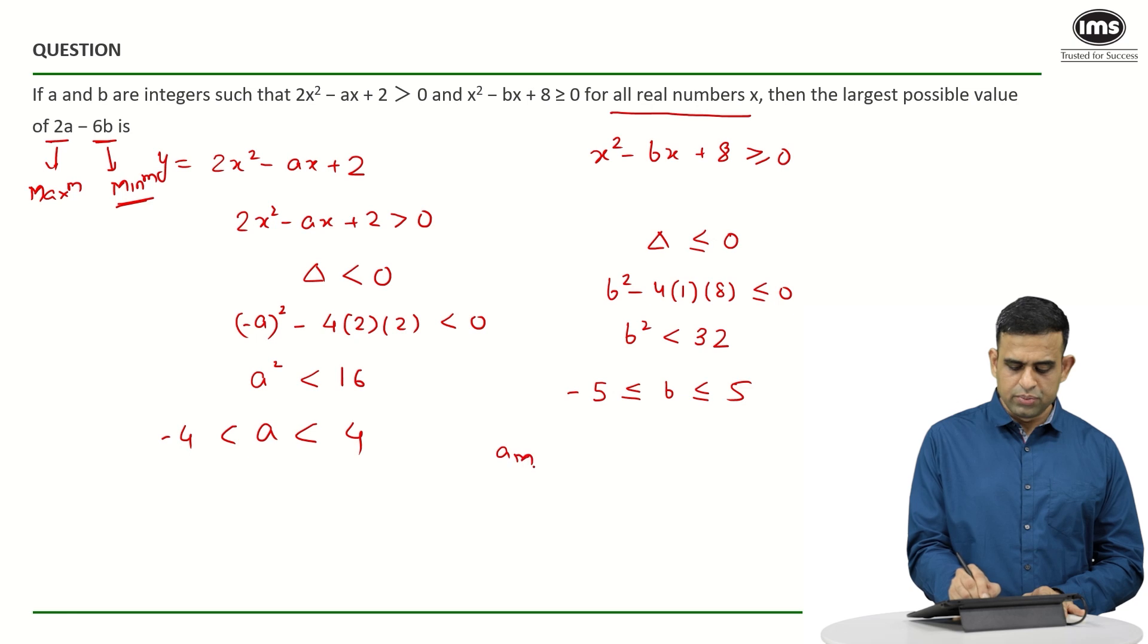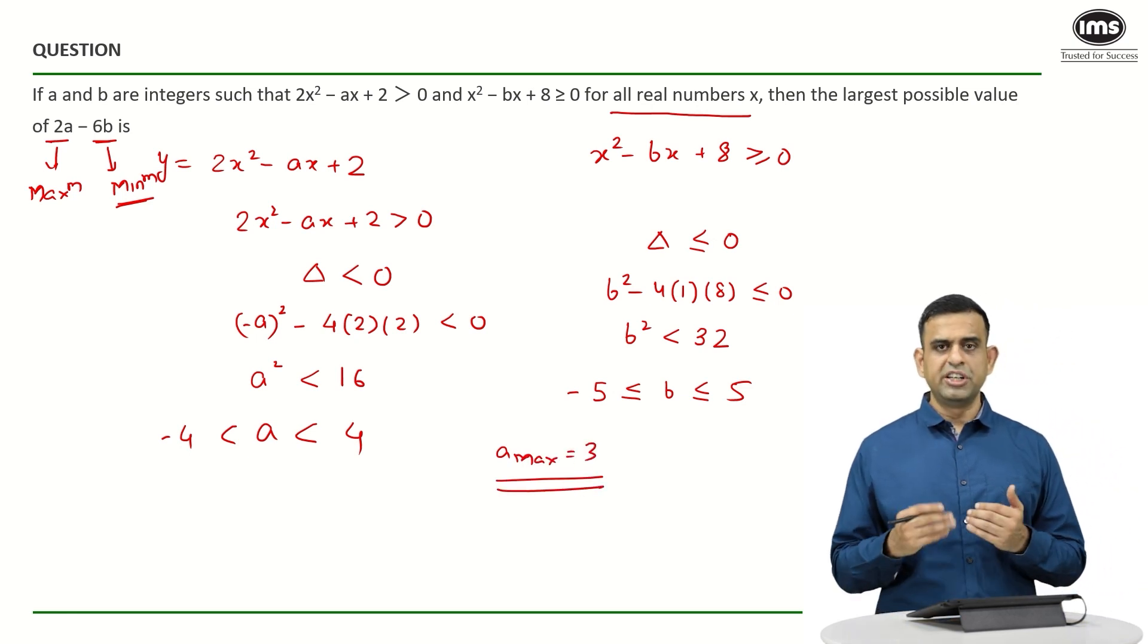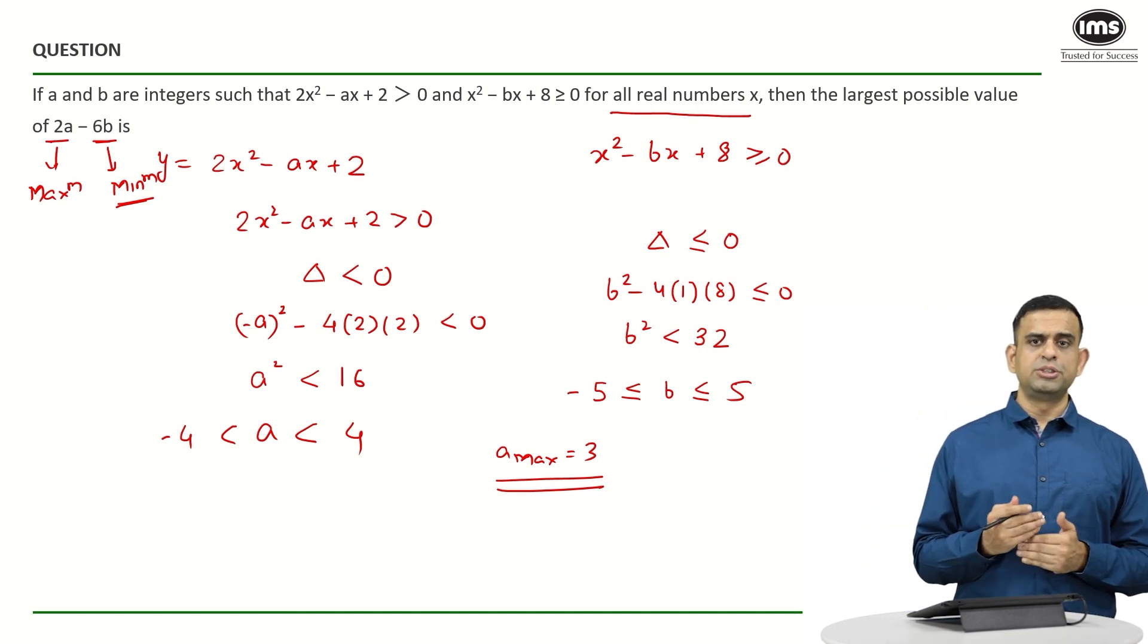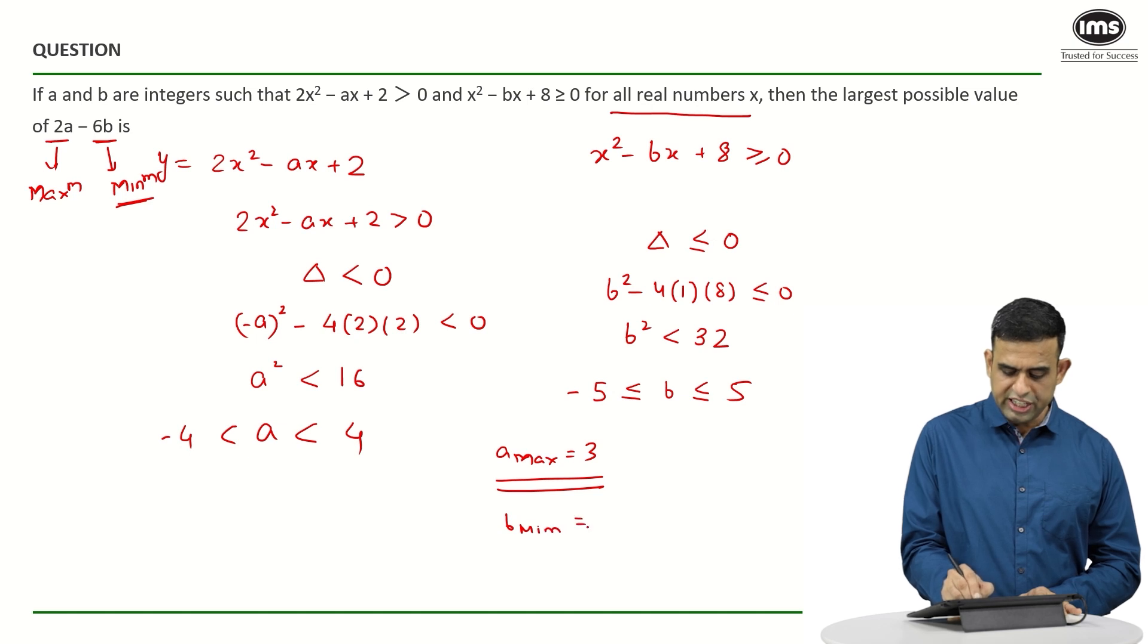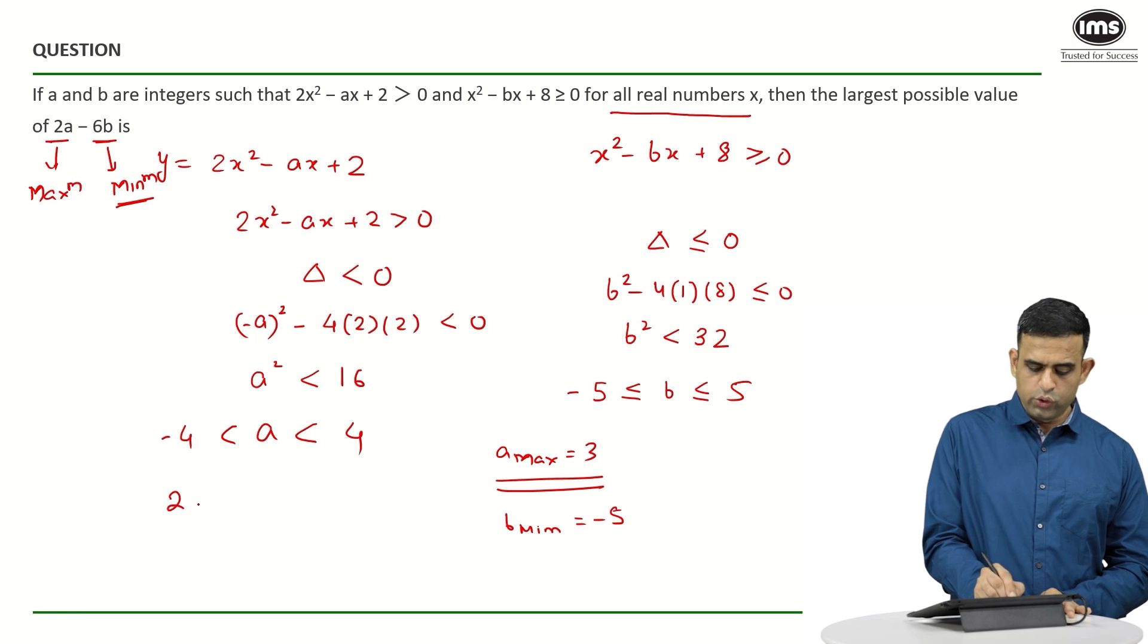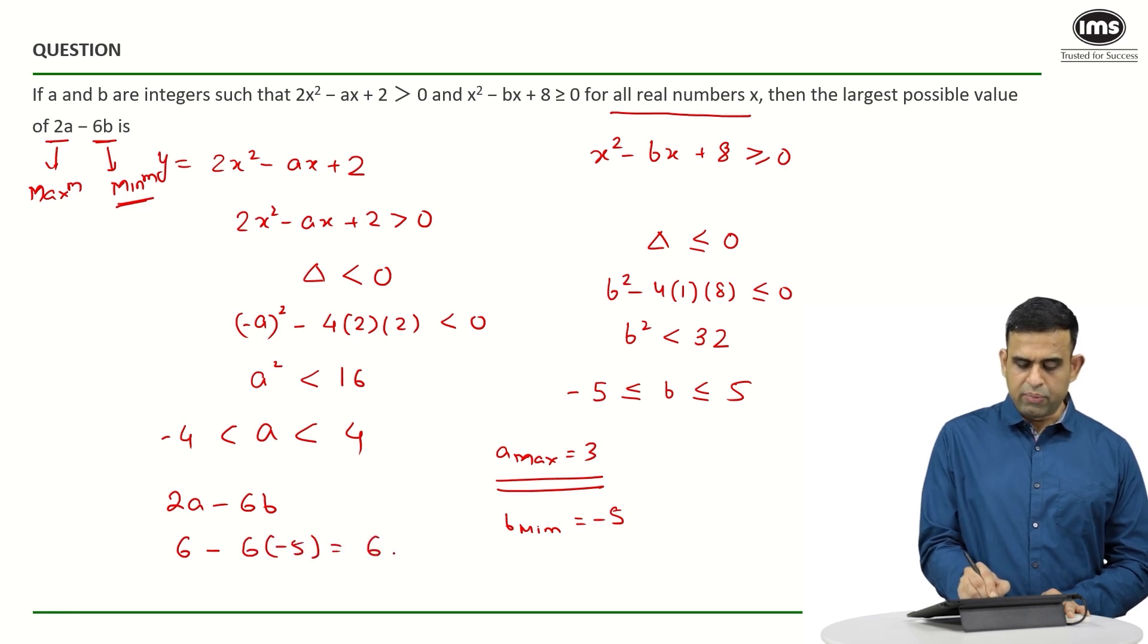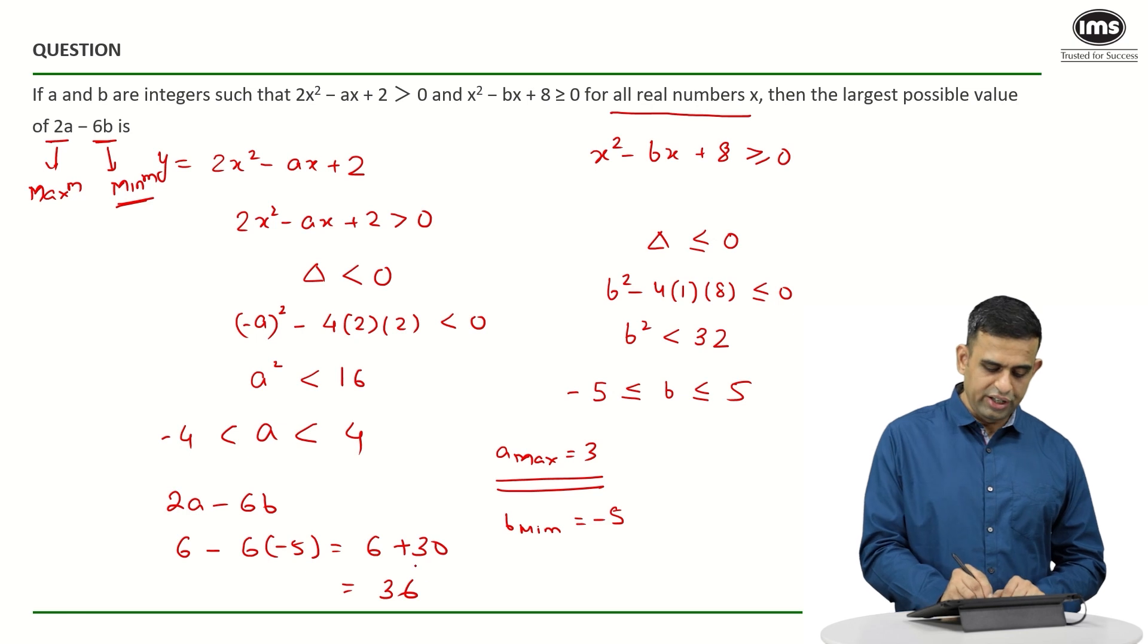and if you look at the term 6b to be minimum, so I should take the lowest possible value of b and here b minimum will as an integer come out to be minus 5. So what about my value of 2a - 6b? 2 into a will become nothing but 2 into 3, 6 minus 6b is minus 5 here. So 6 minus of minus 30 will become 6 plus 30 giving us the number 36. So my answer for this particular question has to be 36.